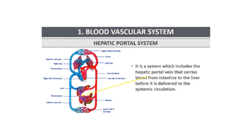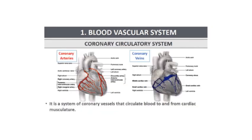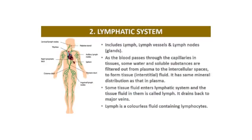The hepatic portal system includes the hepatic portal vein, which carries blood from the intestine to the liver before it is delivered to the systemic circulation. Then we have the coronary circulatory system, which is a system of coronary vessels that circulate blood to and from the cardiac musculature.